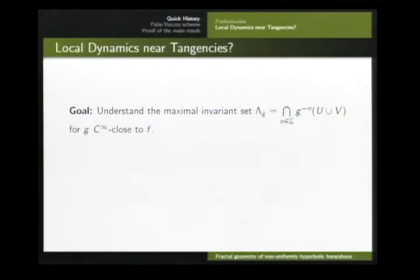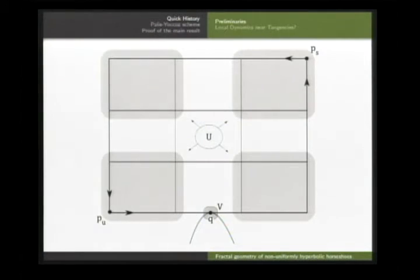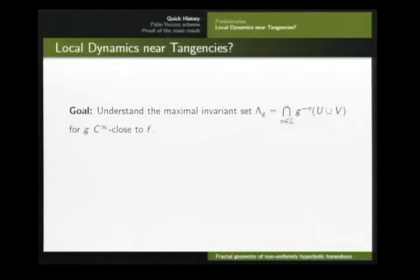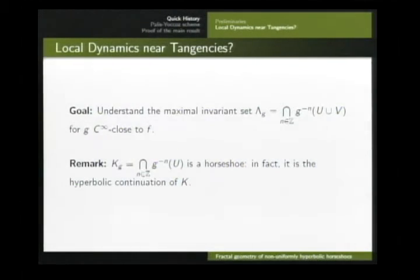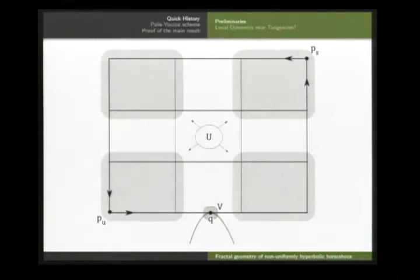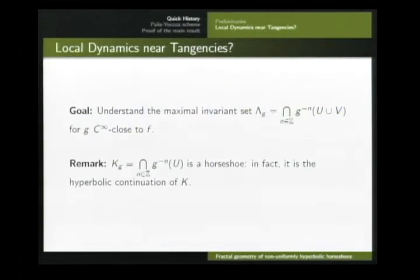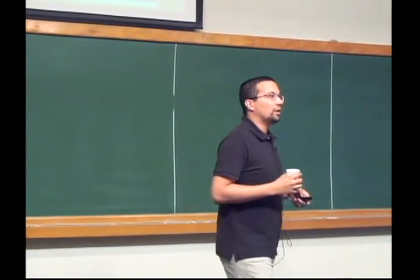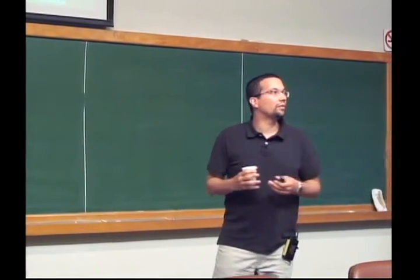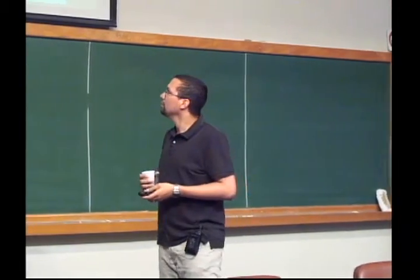The goal of this lecture is to understand the local dynamics of diffeomorphisms infinitely close to f. You start with this picture and then perturb the diffeomorphism to understand what happens afterwards. I'm picking the maximum invariant set of the union of u and v, because if I pick only u — the neighborhood of the horseshoe — then the dynamics is robust and we still get the horseshoe. So if something funny happens, it comes only from the contribution of v.